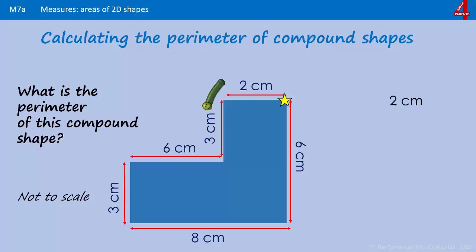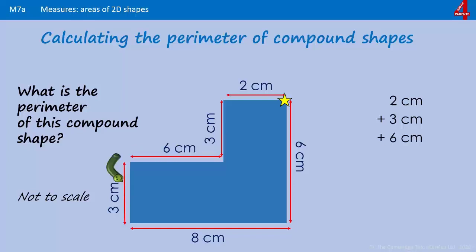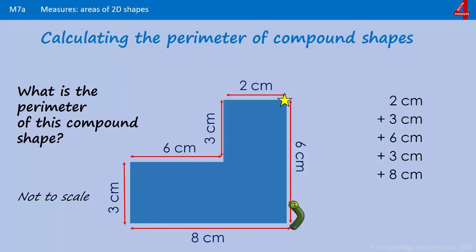Three centimeters down here, turn the corner, walk six centimeters, turn the corner and go down three centimeters. Along the bottom he's going to go eight centimeters, and then up the side back to where he started — that's six centimeters. If you add the centimeters he's traveled around that shape altogether, he's traveled 28 centimeters.